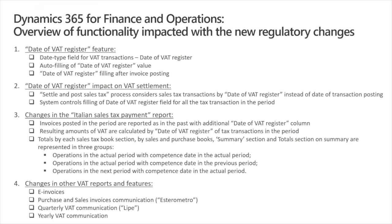The report must show the sequential numbering during registration as well. But since the VAT amount in this scenario must be reported by Date of VAT Register, the report will include this date and the total VAT amounts will be calculated by this date. Each sales tax book section at the end will include three groups of totals instead of one as it was in the past. The first group will report VAT amounts for transactions in the period with tax point in the current period. The second group will show the VAT amounts for transactions in the period with tax point in the previous period. And the third group will show the VAT amounts for transactions in the next period with the tax point in the current period.